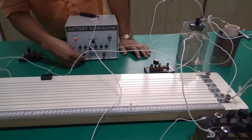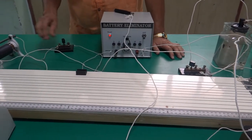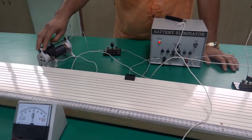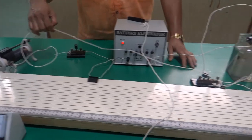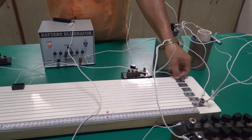This one more positive terminal is connected to your battery eliminator. The negative battery eliminator is connected to the key, and the key is connected to the rheostat. The rheostat is finally connected to another terminal.